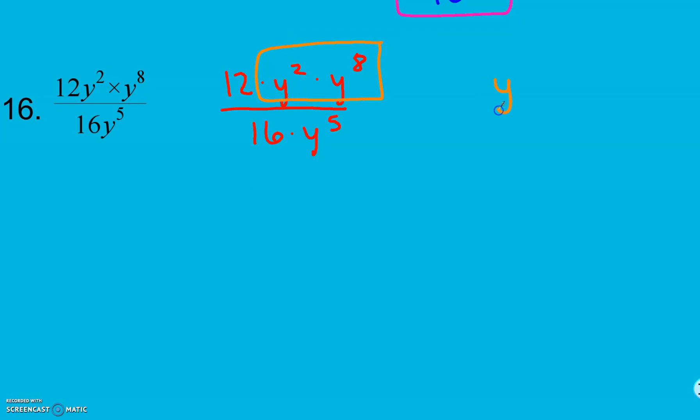Because they have the same base, I keep my base. I'm multiplying them, so I can go ahead and add my exponents. Here, I didn't change my 12, and I didn't change anything in my denominator yet. The only thing I changed was combining those y's that were being multiplied in my numerator.